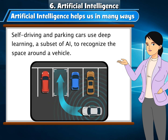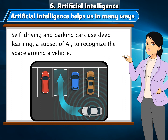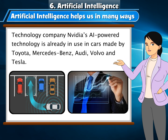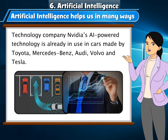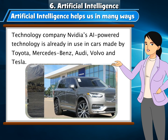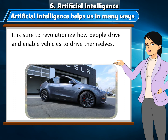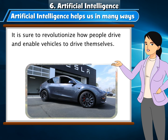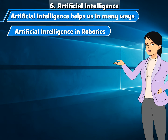Self-driving and parking vehicles: Self-driving and parking cars use deep learning, a subset of AI, to recognize the space around a vehicle. Technology company NVIDIA's AI-powered technology is already in use in cars made by Toyota, Mercedes-Benz, Audi, Volvo, and Tesla. This is sure to revolutionize how people drive and enable vehicles to drive themselves.